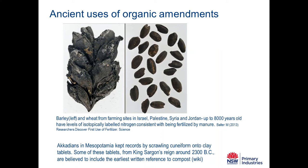There's recently published evidence that organic amendments have been used for many thousands of years. These are grain samples that an archaeology student found, and using stable isotope methodologies of nitrogen, they showed that these grains were fertilised by manure. The first written evidence of compost being used was apparently around 2300 BC. So there is a very long history of use of organic amendments for growing food.